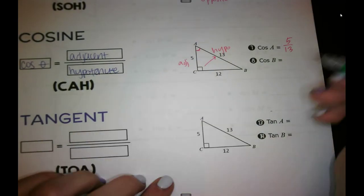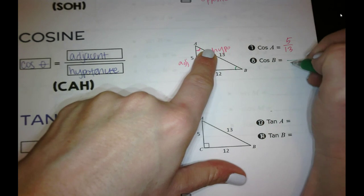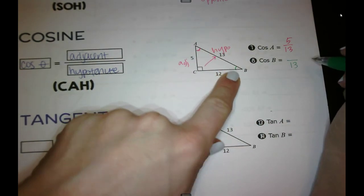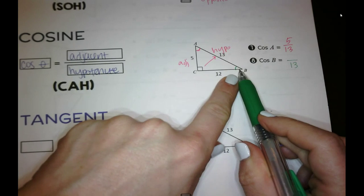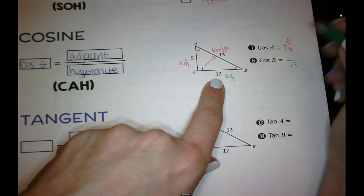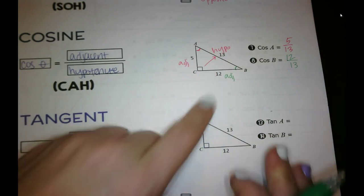Okay, let's look at the cosine of B then. Hypotenuse doesn't change. So 13 is going to be on the bottom. But this time, the side that is next to this angle, that's not the hypotenuse, is this one. So this time, 12 is the adjacent.